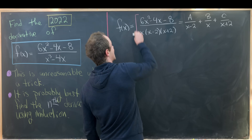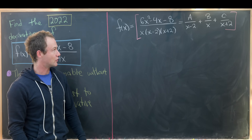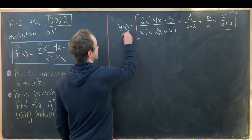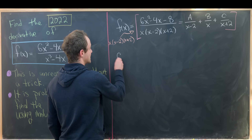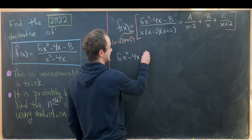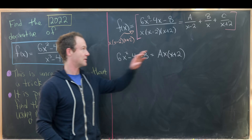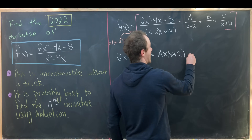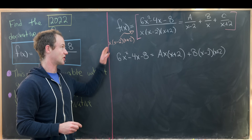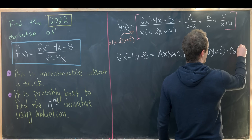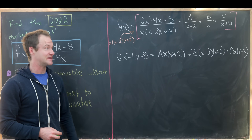Now let's multiply the entire equation by the denominator x(x minus 2)(x plus 2) to turn this from a rational equation into a polynomial equation. We get 6x squared minus 4x minus 8 equals A times x times (x plus 2), plus B times (x minus 2)(x plus 2), plus C times x times (x minus 2). Now we'll use a nice trick to find A, B, and C very quickly — we can do this because there are no repeated roots.